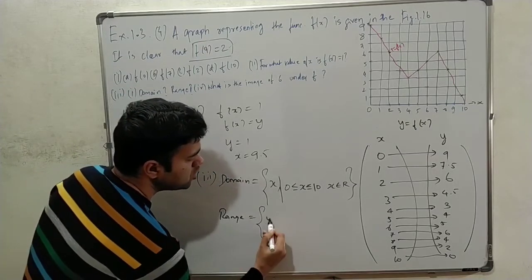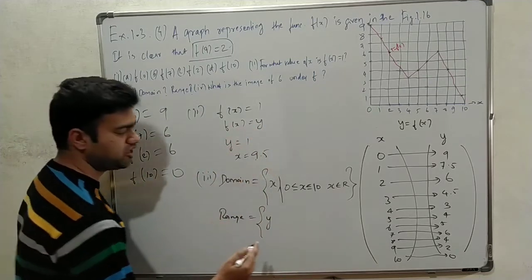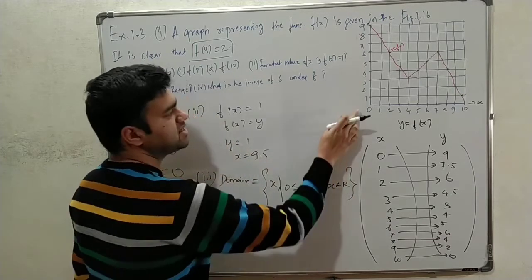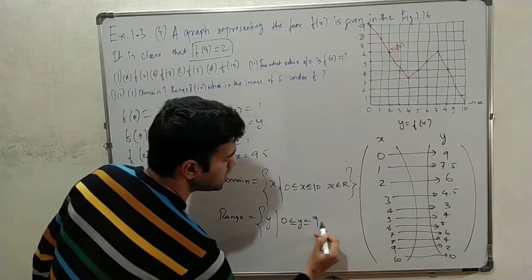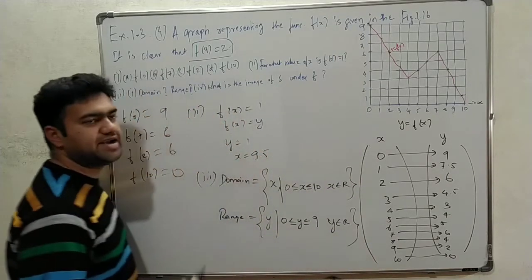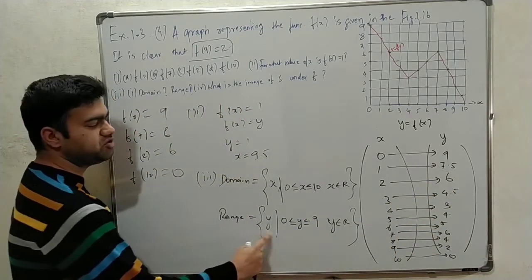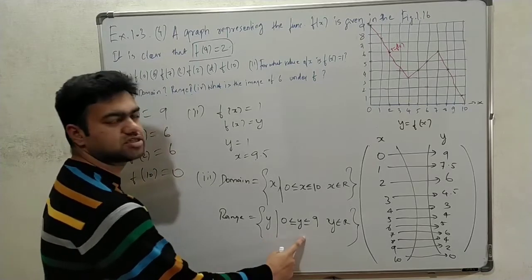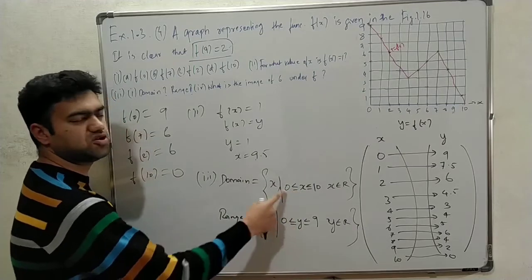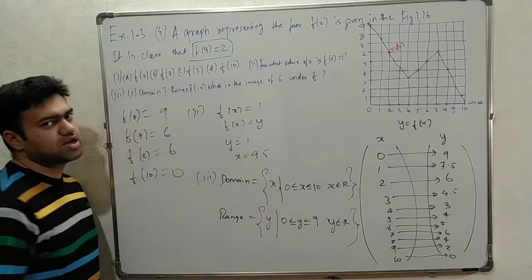The range is the set of y-axis values, i.e., f of x values. The range goes from 0 to 9. Note that we have a point at 7.5 as well. In the textbook answer, x values go from 0 to 10 for domain, and y values go from 0 to 9 for range, where y belongs to the real number system. This is the correct answer.